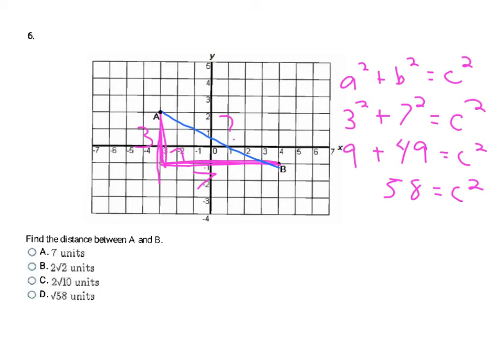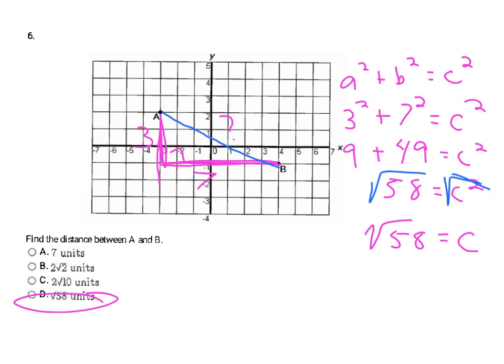Looking at my answers, the only whole number is 7, and 7 squared is 49, not 58, so this won't have a nice whole number square root. I take the square root of both sides, which cancels the square, giving me C equals the square root of 58. That makes D my final answer.